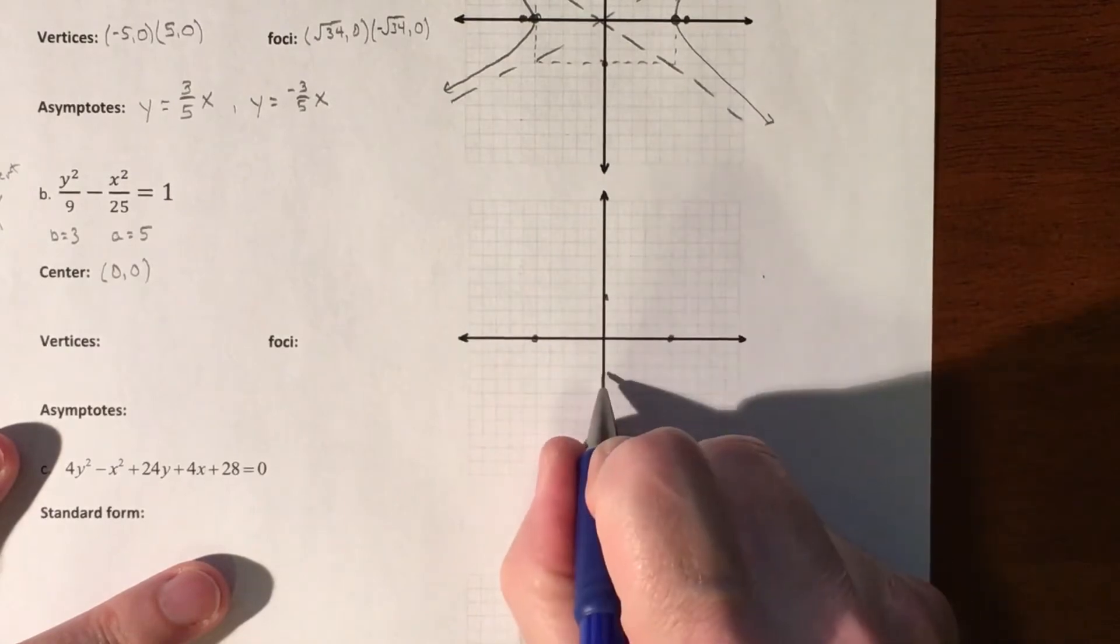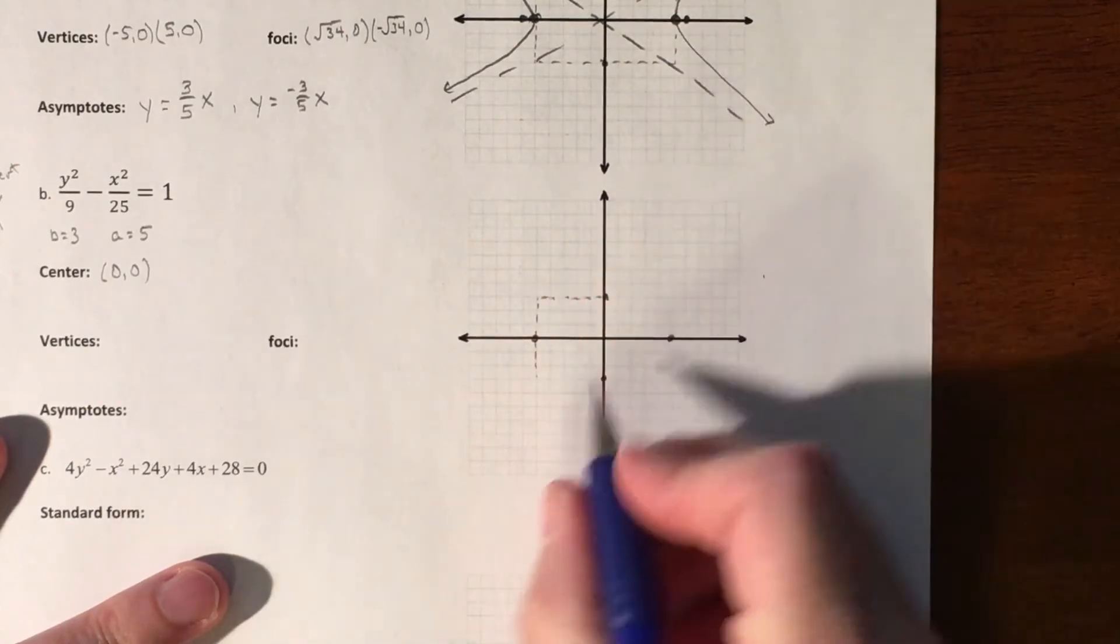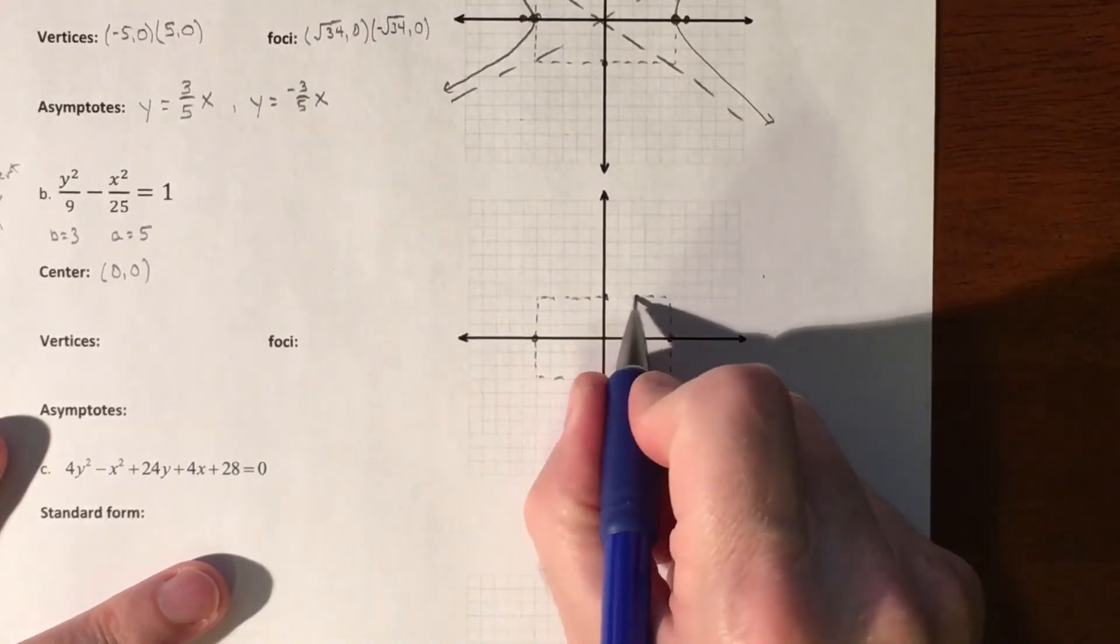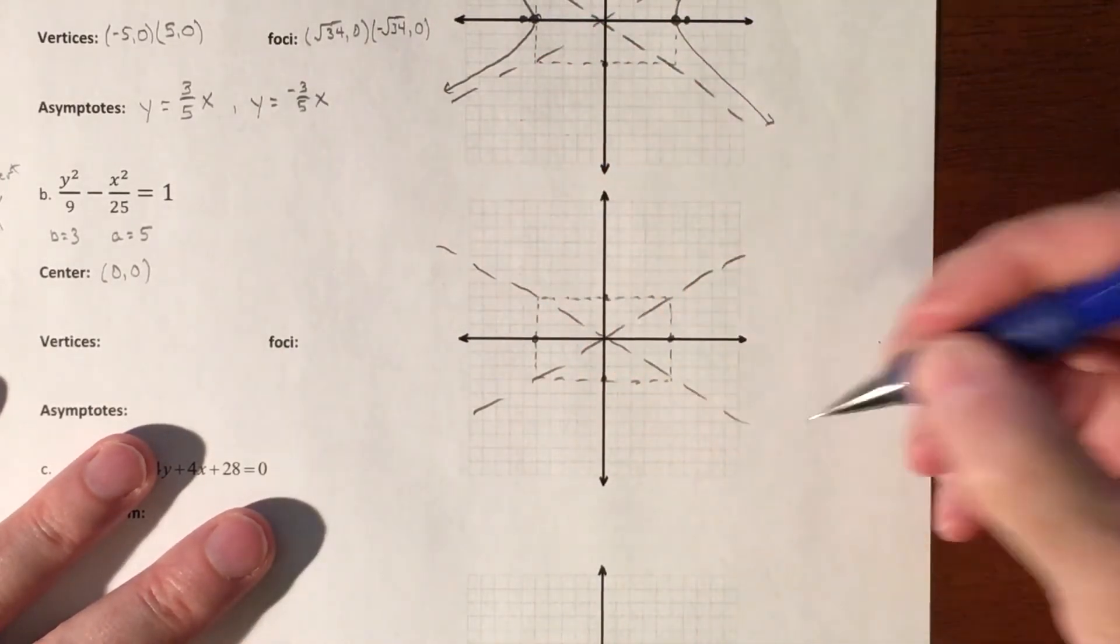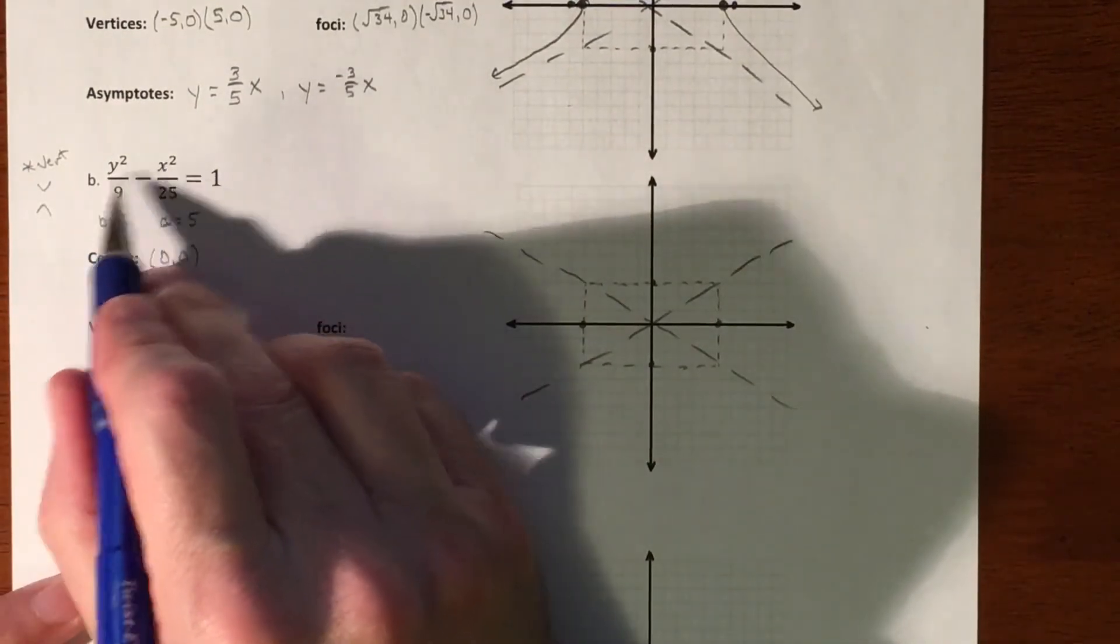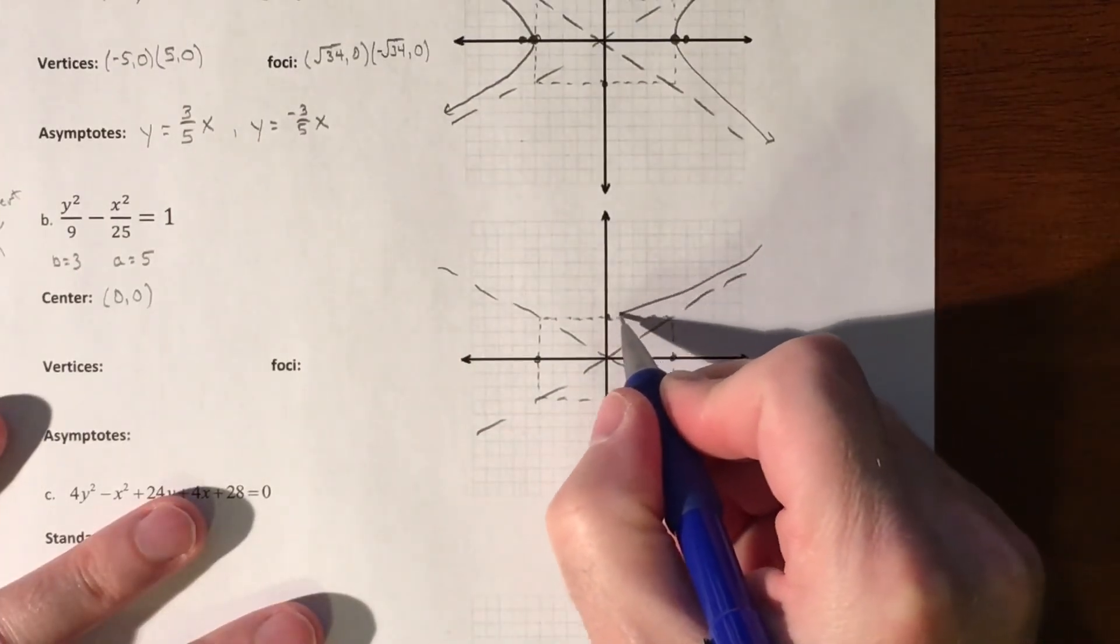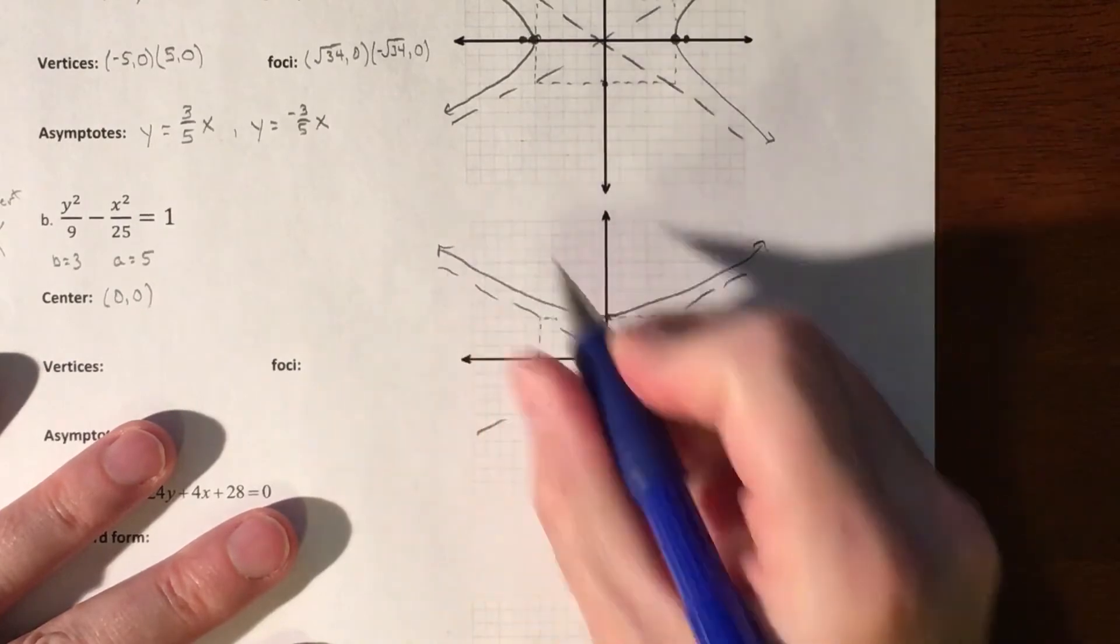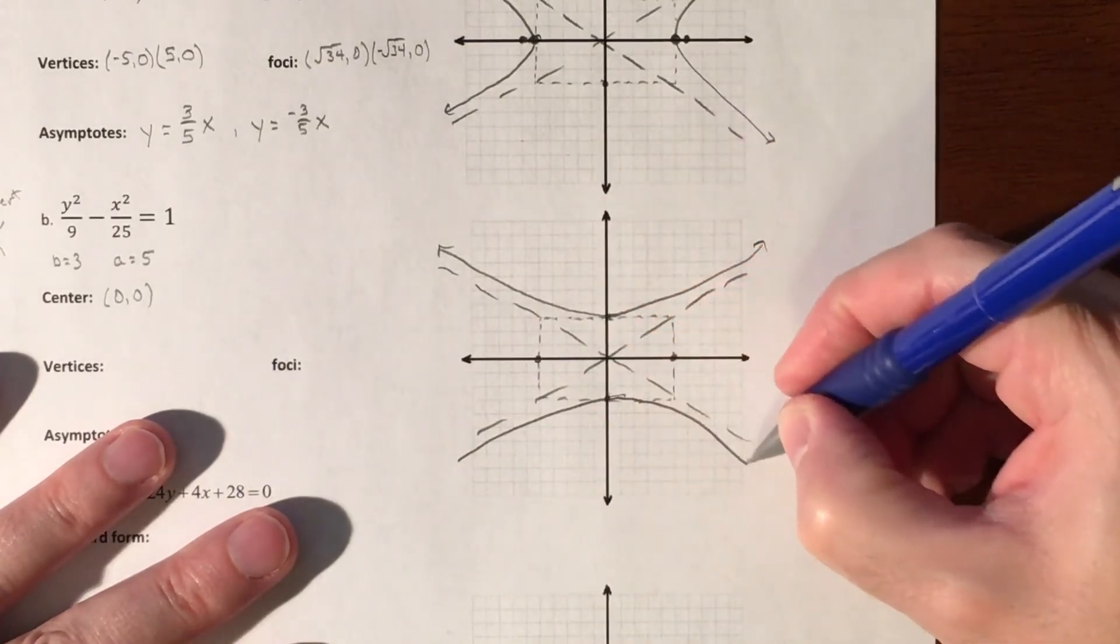3 up. 3 down. We build a rectangle around that. Build a box to line up my asymptotes. Okay. This time though, because we have a y squared minus an x squared, our graph is vertical. So we'll be going up and down. So it's going to be a little bit wider. Breaks off, hits the vertices. Breaks off, hits the vertices. So that graph and then that graph.